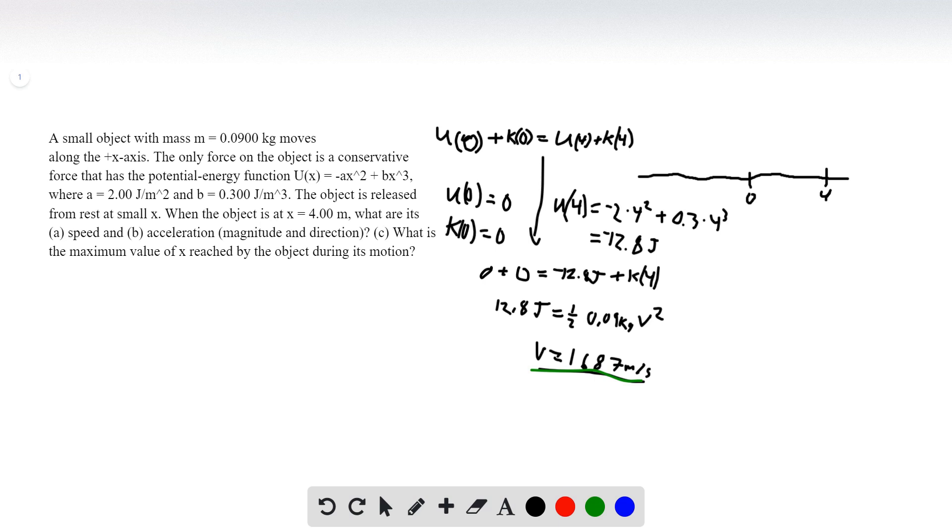B, we need to figure out the acceleration of the object. So we're given the potential energy function here. And I know there's a relationship between the force and the potential energy. And that's going to be force is equal to negative dU/dx of potential energy. And I know how to relate that force to the acceleration. So that's equal to mass times acceleration. So it's easy enough to figure out what this derivative is and divide by mass to find the acceleration.